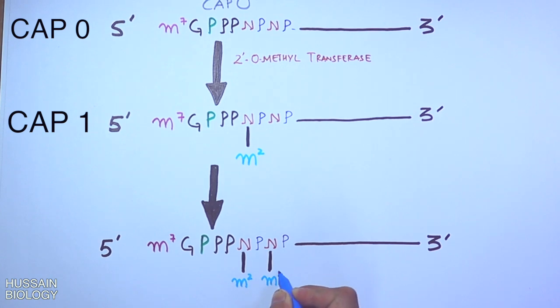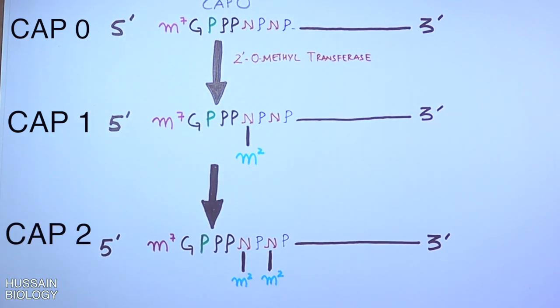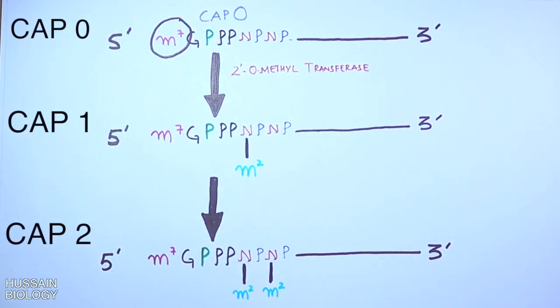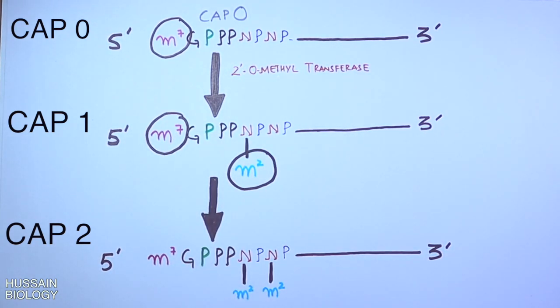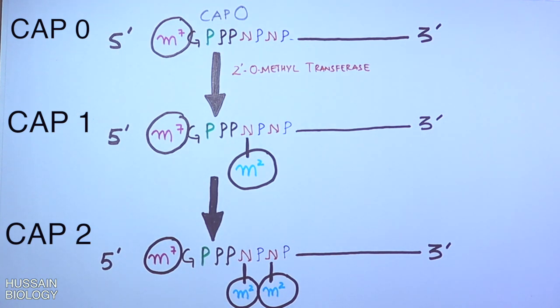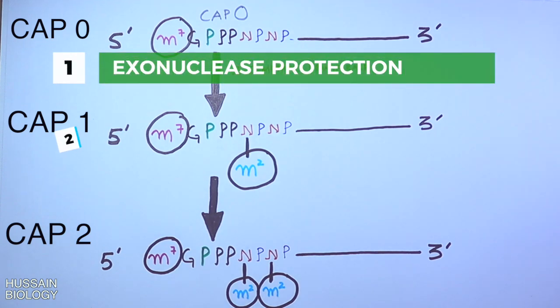Here we see cap 0 has only one methylated site, at the guanosine residue. Cap 1 has methylation at guanosine and the first ribose sugar of the nitrogenous base as shown in the diagram. When we look at cap 2, we have three methylated sites: at guanosine and at the first and second sugars of the nitrogenous bases as shown in the diagram.